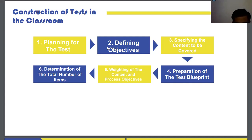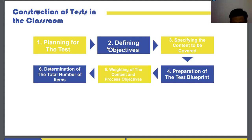The third step is specifying the content to be covered — identifying the area of content you want to test, based on where the objectives have been set. The fourth step is preparation of the test blueprint. A test blueprint is a plan showing the number of items that will be asked under each topic of the content and the process objectives — also called a specification table. There are two dimensions for the test blueprint: the content and the process objectives. The process objectives or mental processes are usually listed on the top row.